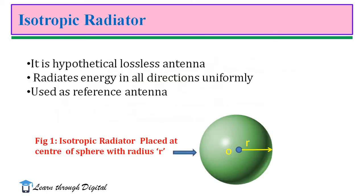Let's start with the isotropic radiator. Isotropic radiator is a hypothetical or fictitious radiator. It is a hypothetical lossless antenna. The isotropic radiator is defined as a radiator which radiates energy in all directions uniformly. It is also called an isotropic source.